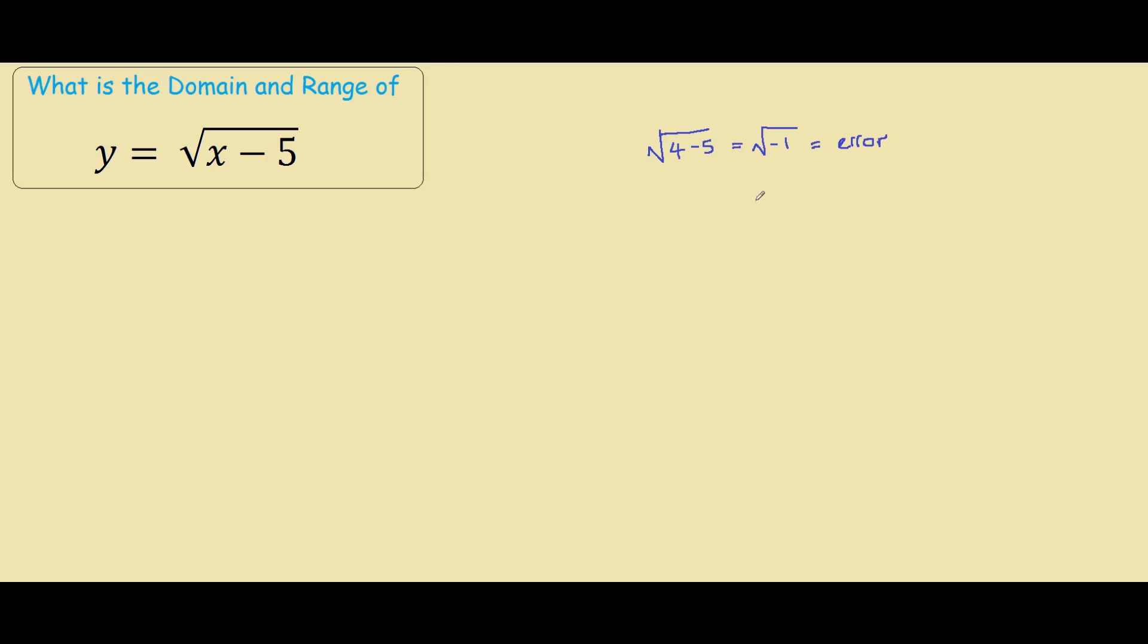This is because in the real number system, we cannot take the square root of any number less than 0. For example, the square root of negative 2, negative 3, or negative infinity will all produce errors.